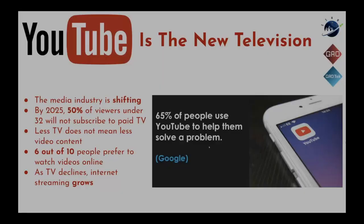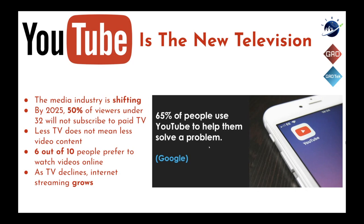YouTube is kind of like the new television. Television came about in black and white, then we had radio, then it went color, then YouTube came in and now we're in this whole world of streaming everything. The media industry has shifted. 65% of people now use YouTube to help them solve a problem. It's predicted that by 2025, 50% of viewers under 32 won't even subscribe to paid television anymore. Six out of 10 people actually prefer to watch videos online.